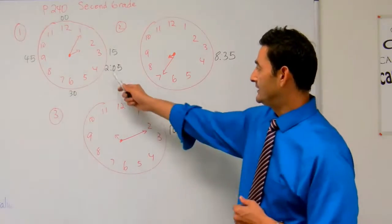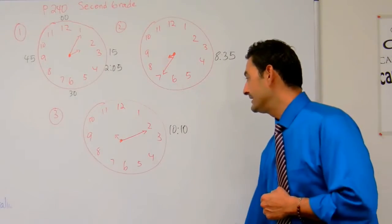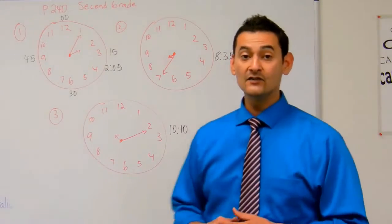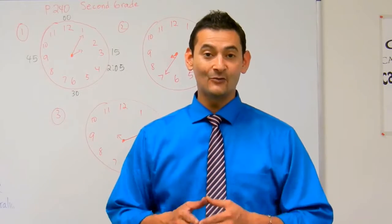So boys and girls, number one is going to be 2:05, number two is going to be 8:35, and number three is going to be 10:10. Go ahead and work on sets one and two in your hybrid math workbook, and we'll see you at the next video.